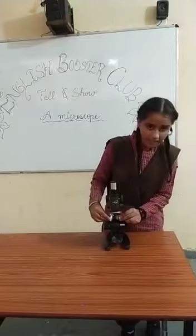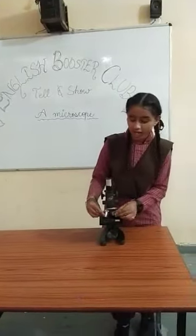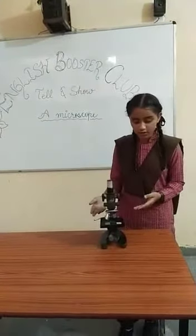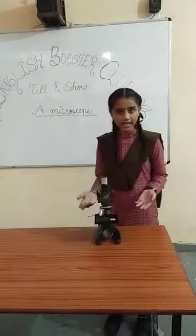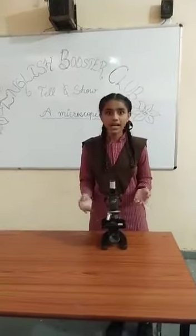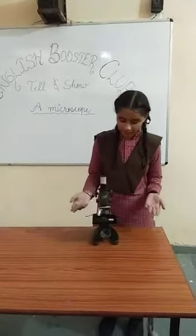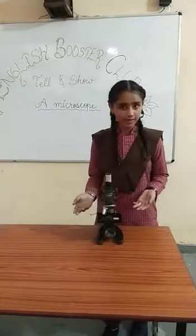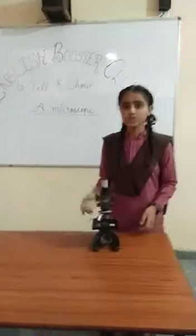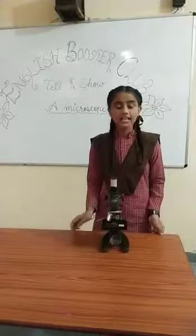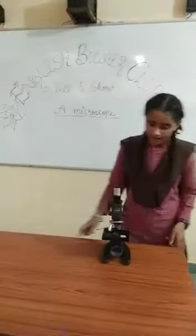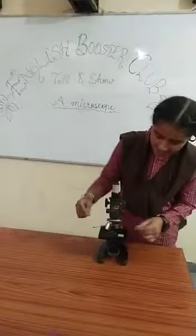These objective lenses are found with the magnification of 10 times, 40 times and 100 times. The lower power lenses are the shortest lenses. The highest power lenses are the longest lenses.